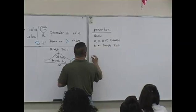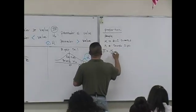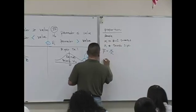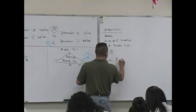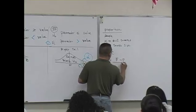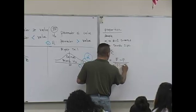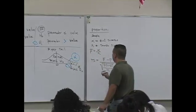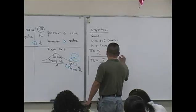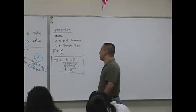And you compute a sample proportion. Here's your test statistic: the test statistic is p hat minus p over the square root of p times 1 minus p divided by n. This is your test statistic formula when you have a hypothesis test about a proportion.